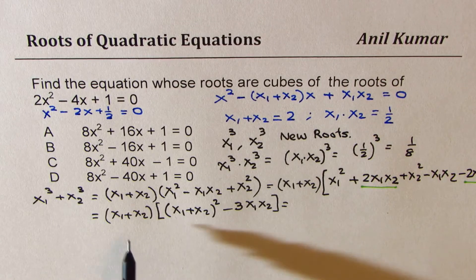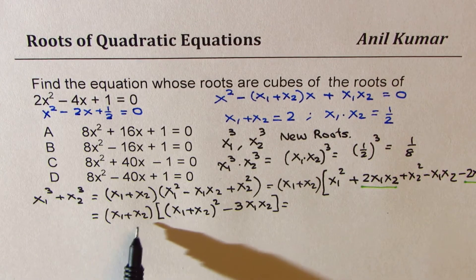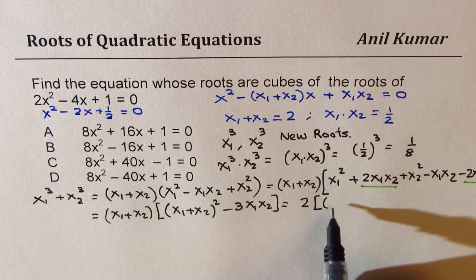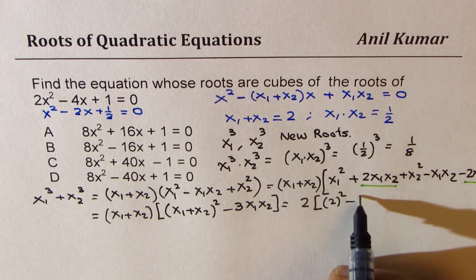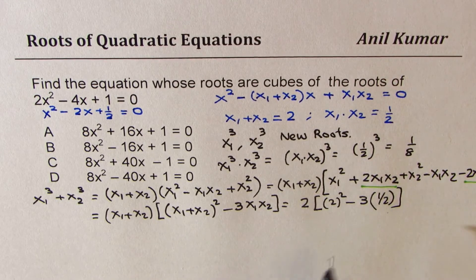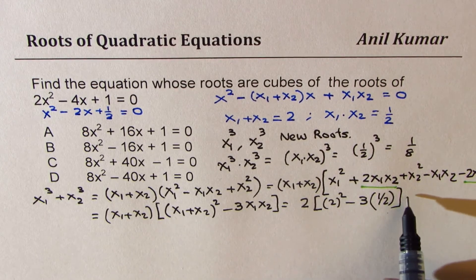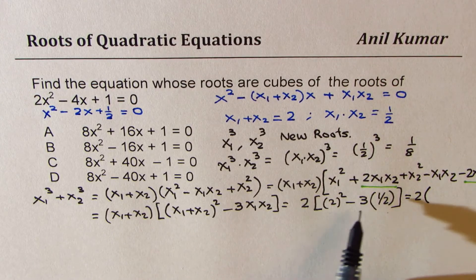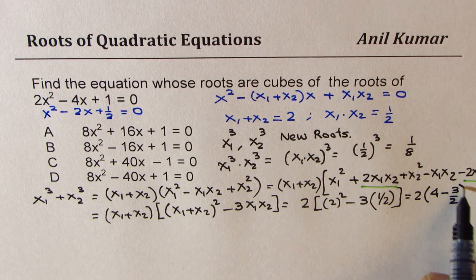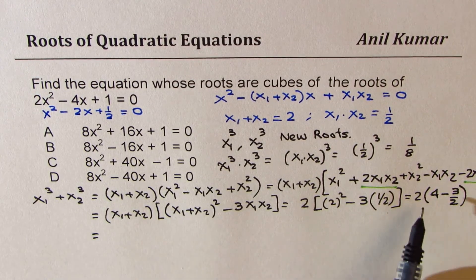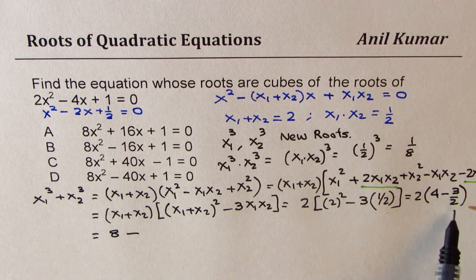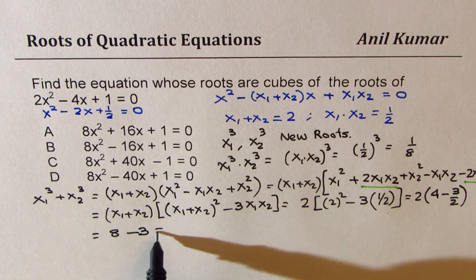Now we substitute the values to get the sum of cubes. x1 plus x2 is 2, so we substitute 2 times (2 squared minus 3 times one half), which gives 2 times (4 minus 3 over 2). Opening this up: 2 times 4 is 8, minus 2 times 3 over 2 is 3, giving 8 minus 3, which equals 5.